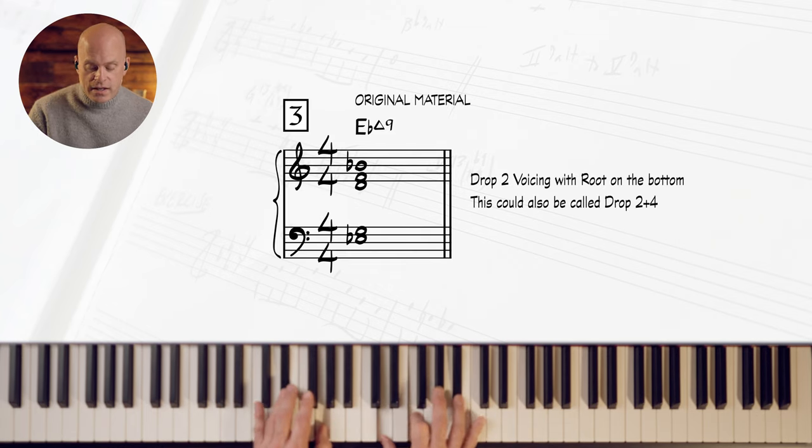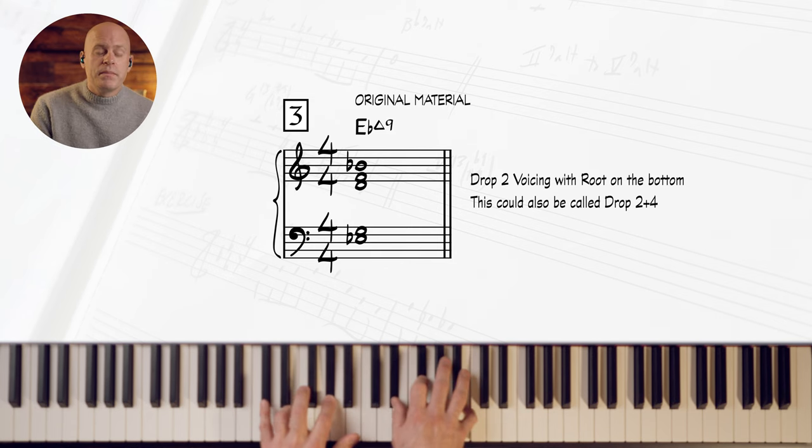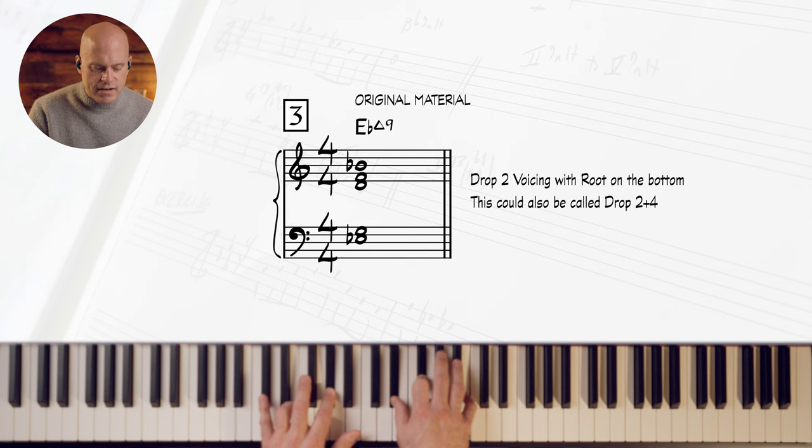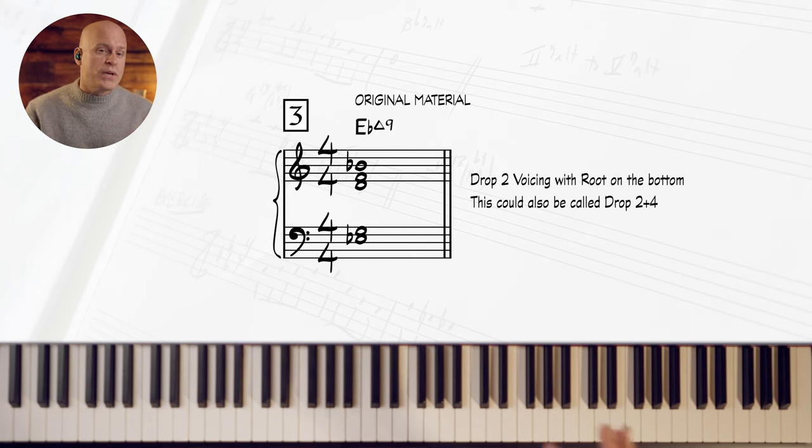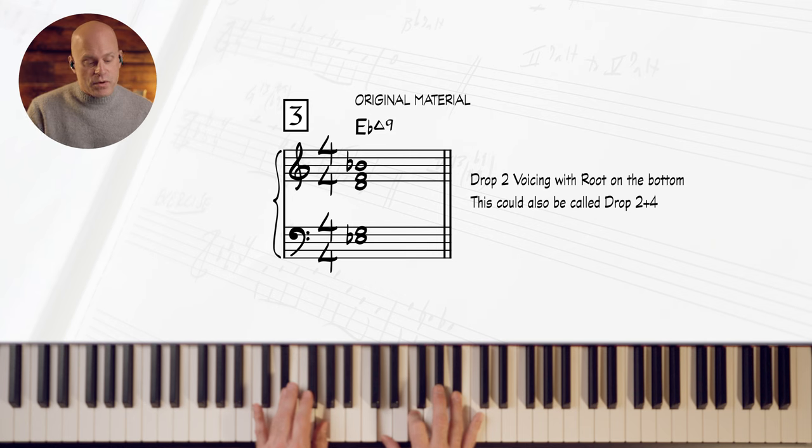But whatever that combination of notes is, I'm going to show you 16 different chords you can get from this one structure. So first of all, you want to take that through the keys. Because of time, I'm not going to go through every key. So let's go through each variation that I found. Well, there's our major nine voicing.